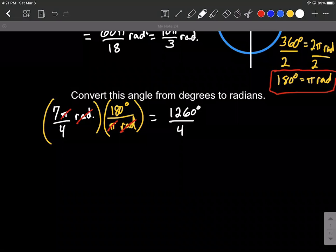And this will reduce down a little bit more as well, that 1260 divided by four makes 315. And our units, again, were degrees because we got to cancel out radians.